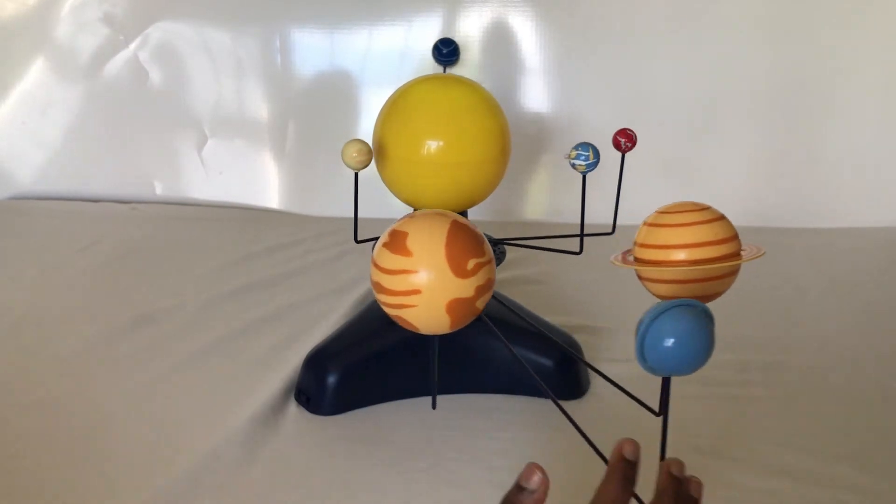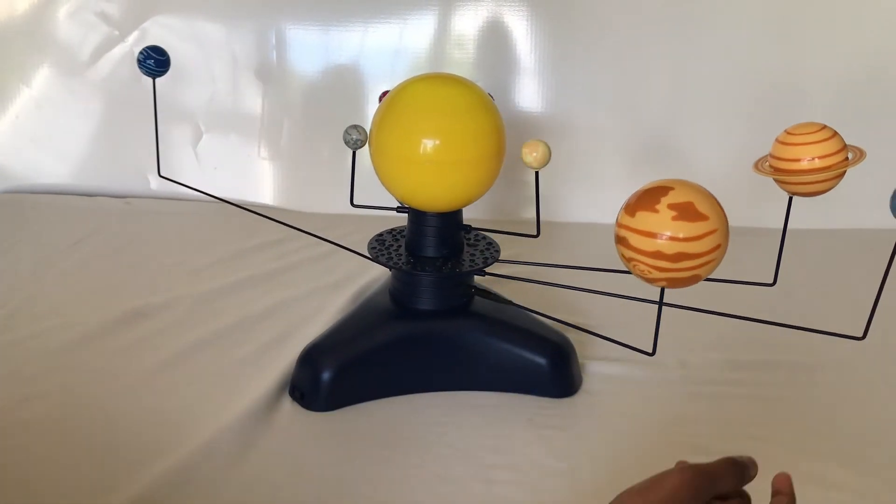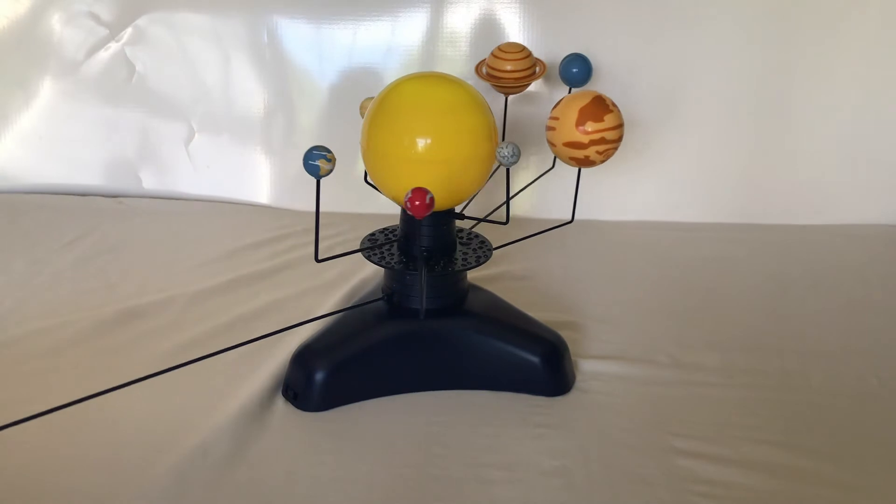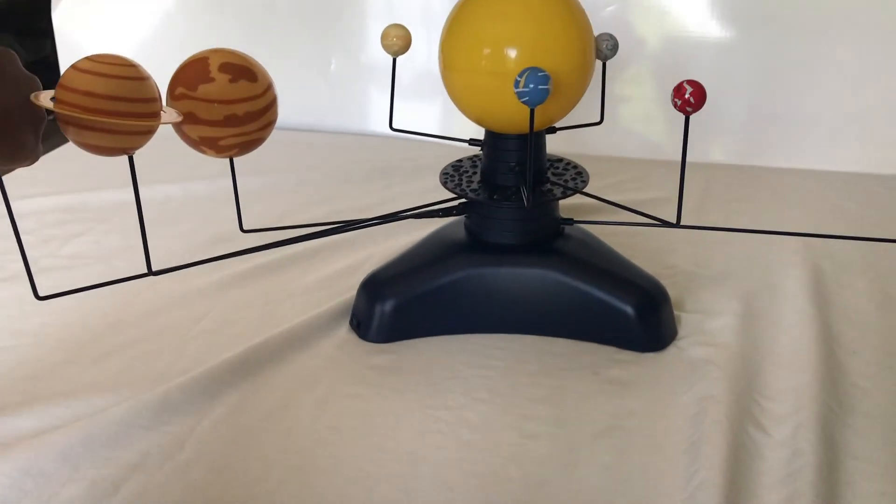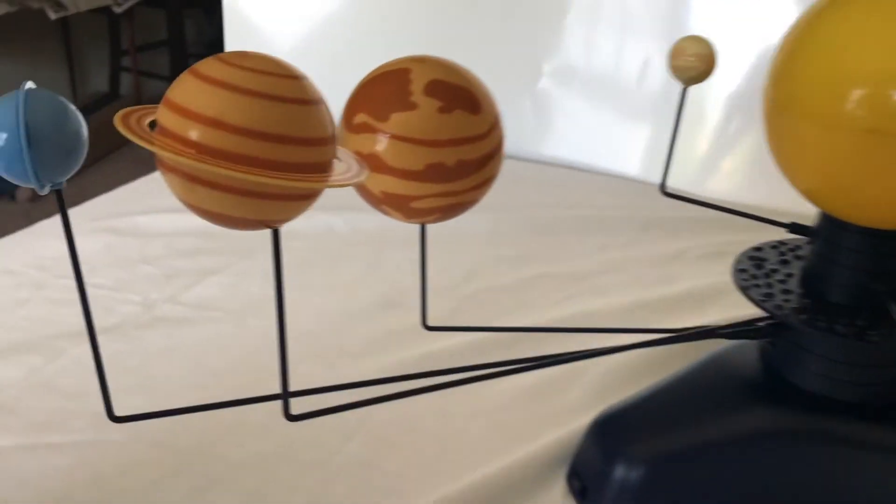Now we are going to go to Uranus. Uranus has a little ring, as you can see. It's kind of blue-green. The seventh planet is Uranus. Uranus has 27 moons.